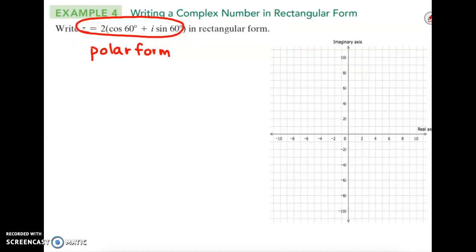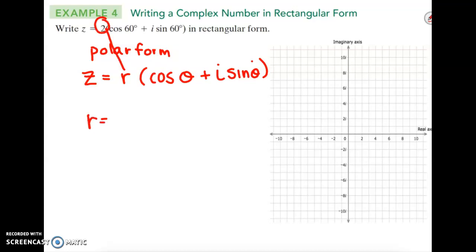All right, so our polar form general equation is z equals r times cosine theta plus i sine of theta from that yellow slide. And we have to identify what is the r value. So the r value in that equation is right here, number two. So r equals two.